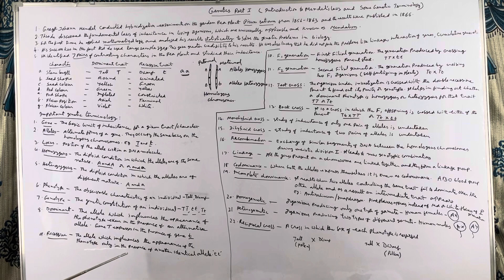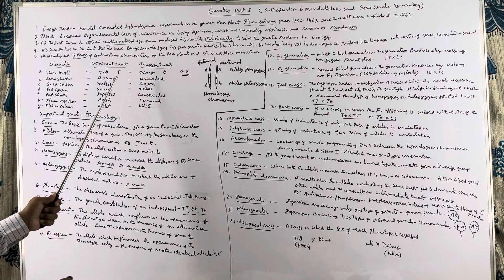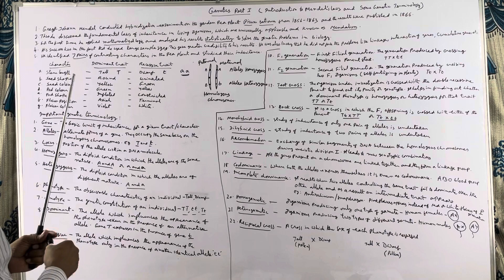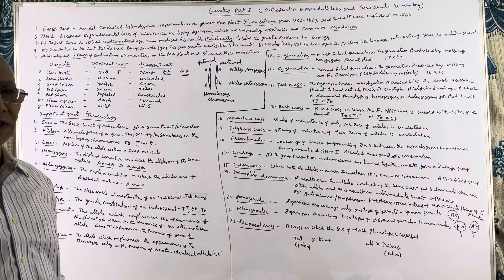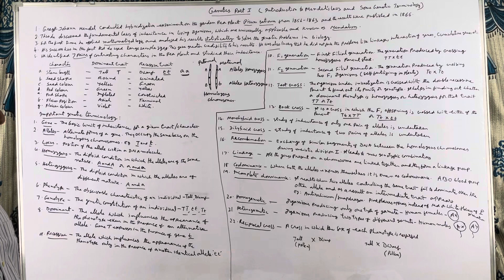Recessive: the allele which influences the appearance of the phenotype only in the presence of another identical allele. When does a plant show the dwarf trait? Only when both the alleles are recessive in nature. So a recessive trait appears only when both alleles are of the recessive type.